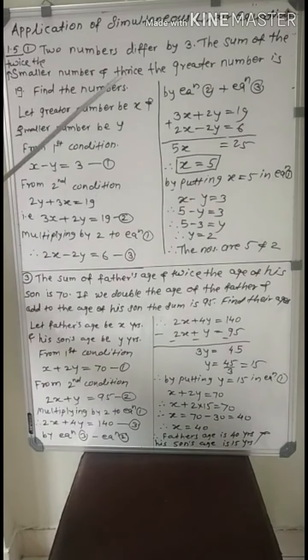From the second condition, read the example again: the sum of twice the smaller number. Sum means plus. Twice the smaller number, smaller number is y, its twice means 2y. Sum such as plus, and thrice the greater number, thrice means 3x. Is equal to 19. By rearranging them, 3x plus 2y equal to 19 is equation number 2.